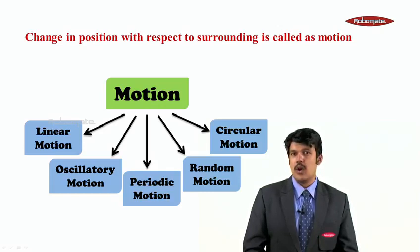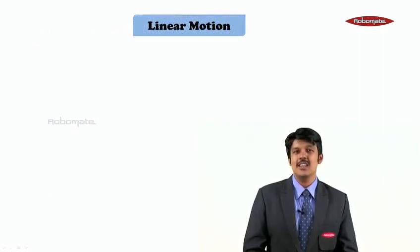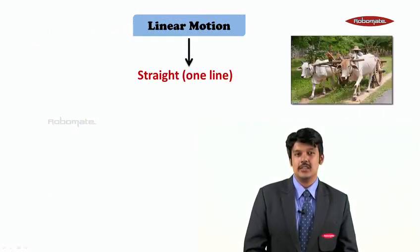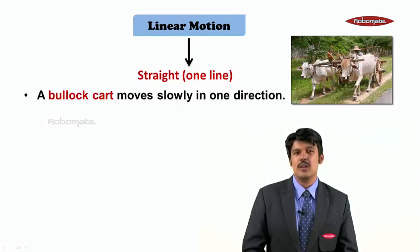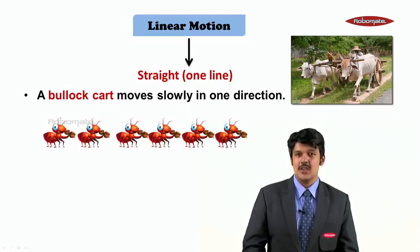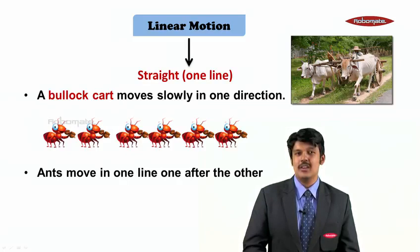The first type of motion we are going to study is called linear motion. The meaning of the term linear is straight — one line. You must have seen bullock carts moving from one place to another; a bullock cart moves slowly in one direction, which means it is in linear motion. You must have seen ants moving one behind the other in a straight line — so we say ants are in linear motion.